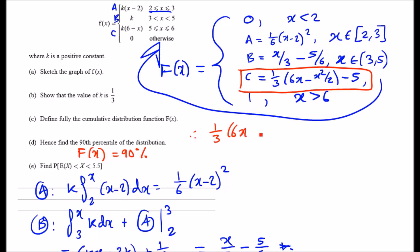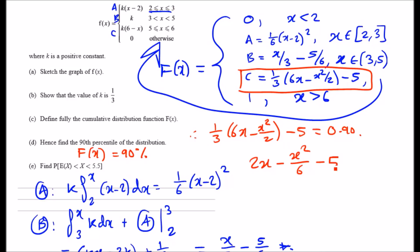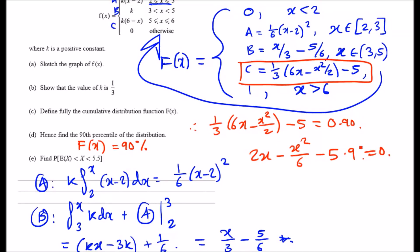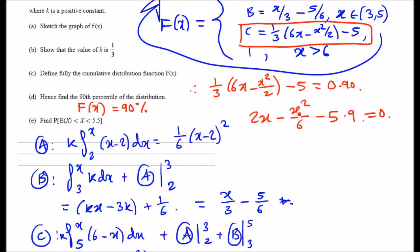Setting the CDF for piece C equal to 0.9: one third times (6x minus x²/2) minus 5 equals 0.9. Expanding gives 2x minus x²/6, and subtracting across gives minus 5.9. Rearranging to standard quadratic form: x²/6 minus 2x plus 5.9 equals 0.